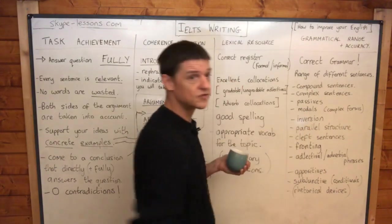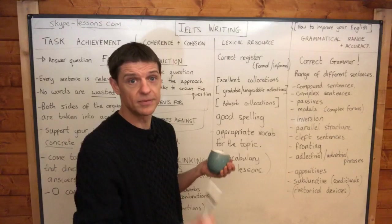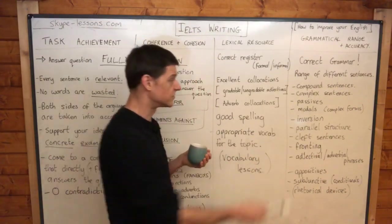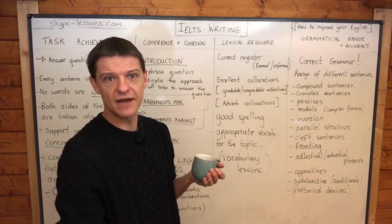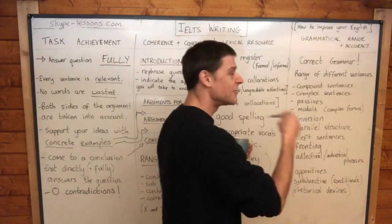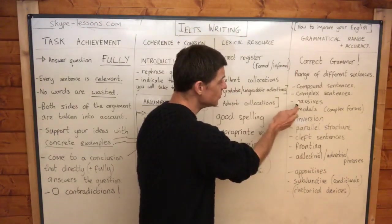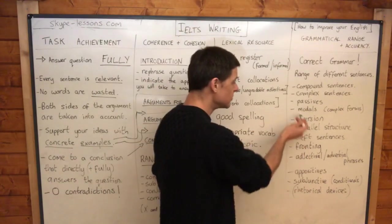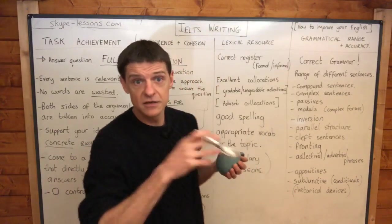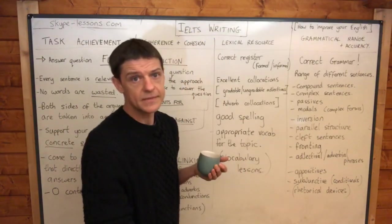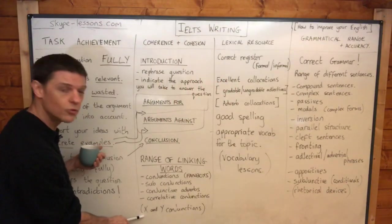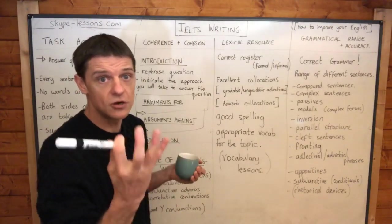But don't only use those two, because that will still be a very simple essay. Use passives. Use modals in complex forms — 'could have done,' 'must have done,' 'should have done.' One is plenty in the essay; don't make every sentence a complex modal, but certainly use a range. Use passives in various tenses. Use inversion — if you've got an X and Y conjunction like 'not only did I,' you've already got inversion. Use parallel structure — I've got lots of videos on that, and it's very important for X and Y conjunctions.